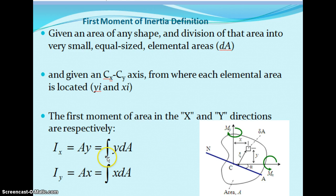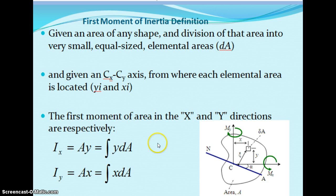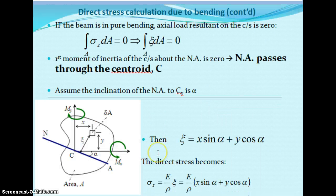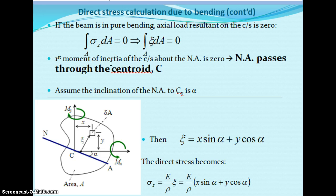The first moment of inertia: Ix equals the integral of y·dA, and Iy equals the integral of x·dA. Similarly, we can find the second moment of inertia. If any beam is in pure bending, the axial load resultant on the cross section is zero, that is the integral of sigma_z·dA equals zero.